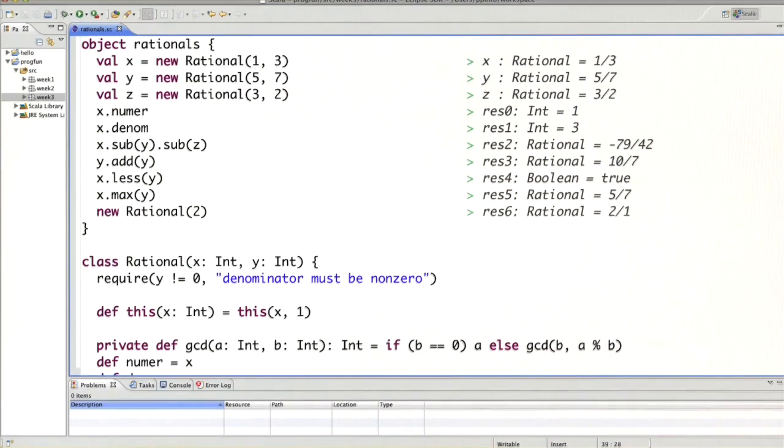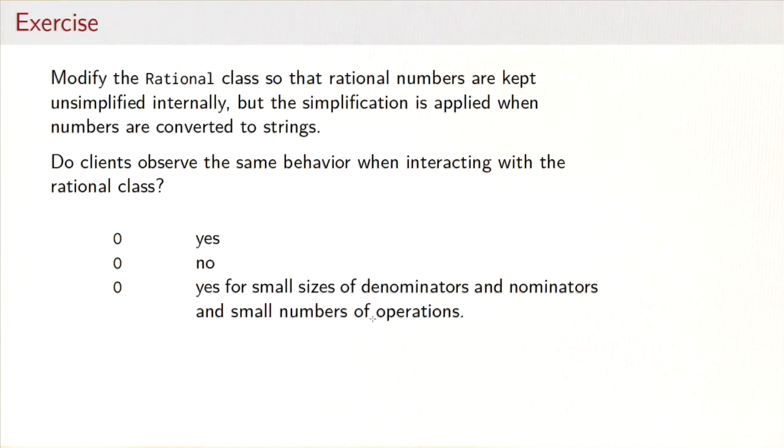So is that always the case? Well, the answer actually is no. It's only the case if the numerator or denominator is small. The reason for that is that we are dealing here with integers as the fields of a class rational and so we might exceed the maximal number for an integer which is a bit more than two billion. For that reason it is actually better to always normalize numbers as early as possible because that means that we can perform more computations without running into arithmetic overflows.